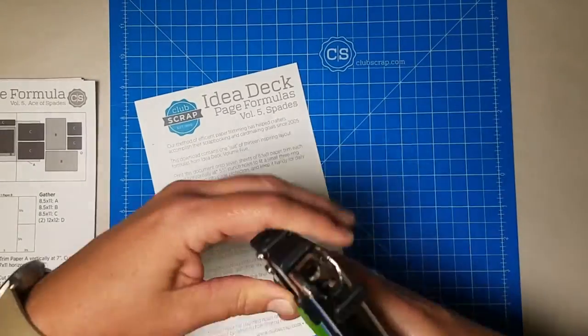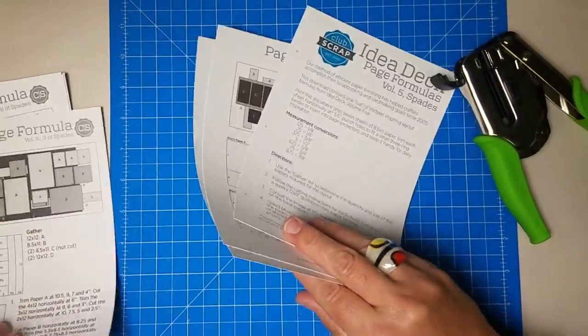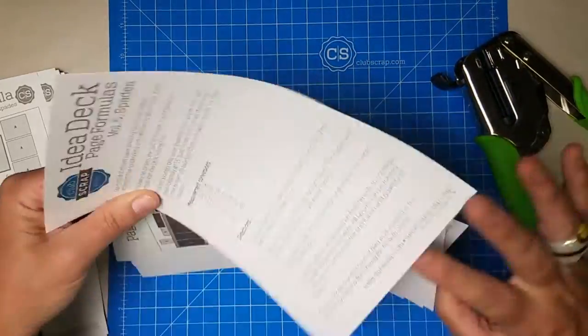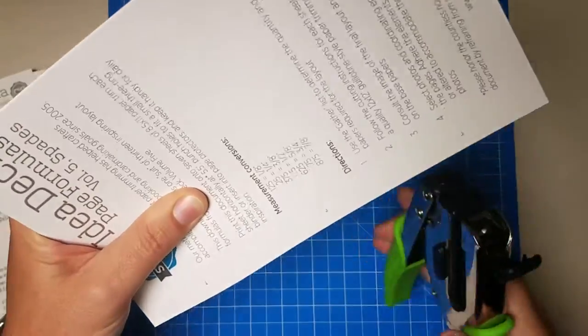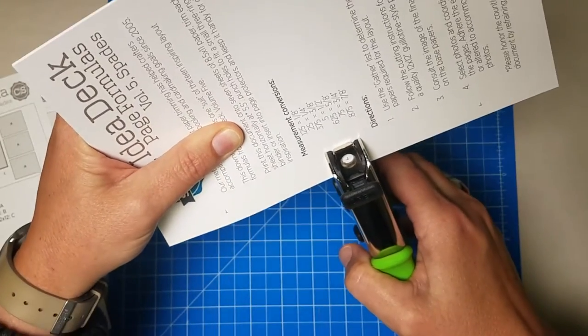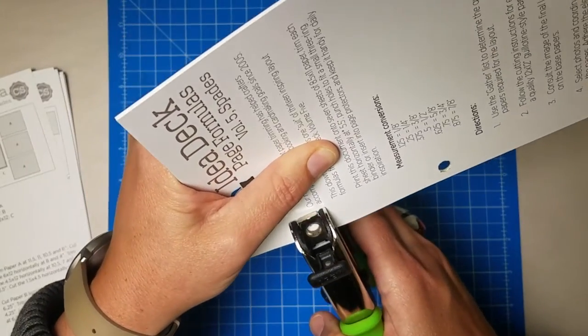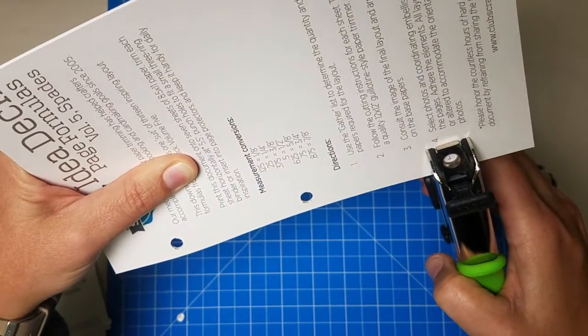I have this handy Crop-A-Dial punch. You can use any type of a hole punch, but since I'm doing a stack here, I wanted to be able to punch through several at a time. So I'll use this as my template, and I can just see where I'm going to center up my hole and squeeze to pop out those three holes for the binder rings.